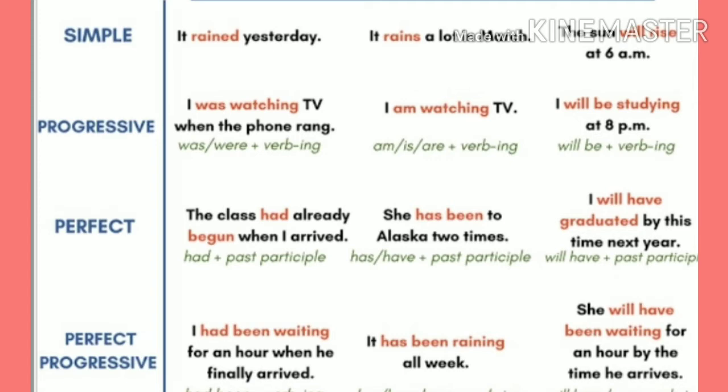You can see the changes in the verbs only when we are changing the tenses. In progressive we say 'I was watching TV when the phone rang,' 'I am watching TV,' and 'I will be studying.' So these are the three progressive tenses.